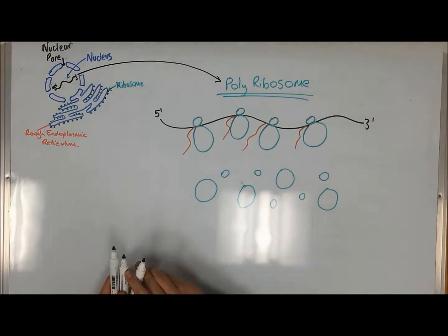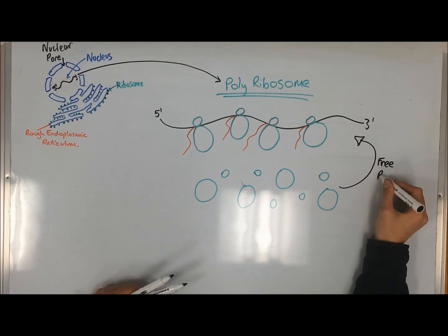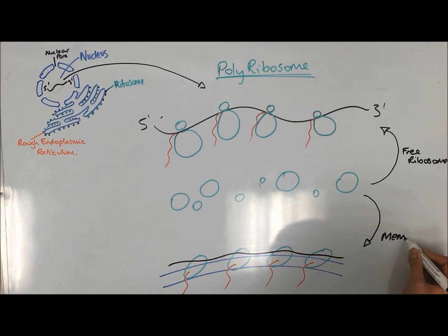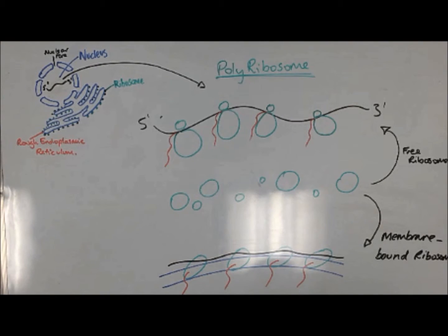There are two populations of polyribosomes that share the same pool of ribosomal subunits: free ribosomes and membrane-bound ribosomes. It is important to note that no ribosome is permanently bound to the ER. They are only associated with the RER temporarily in protein synthesis.